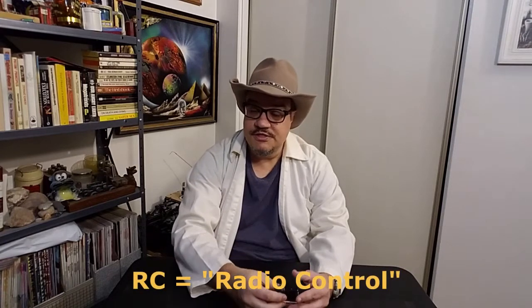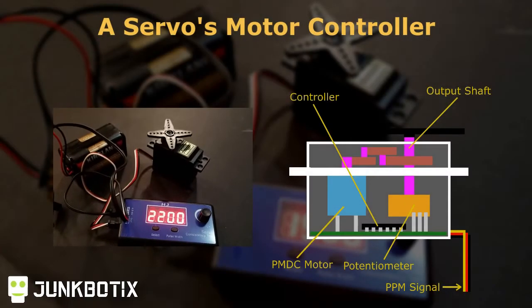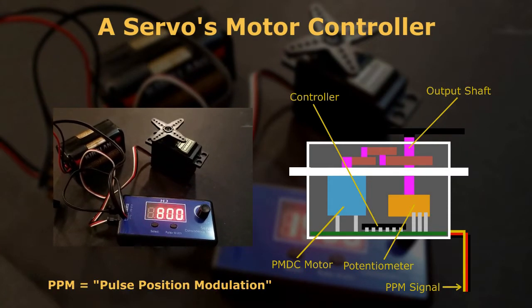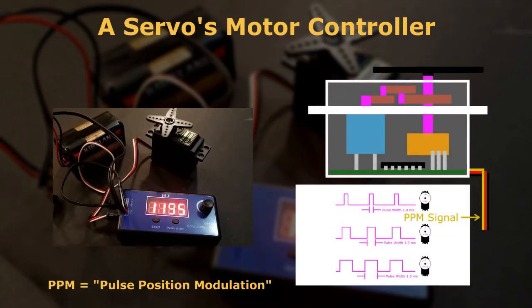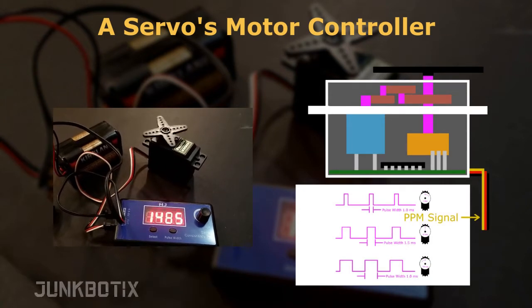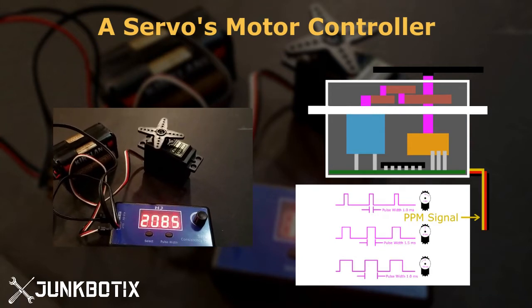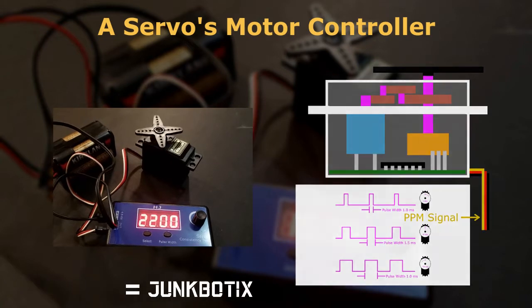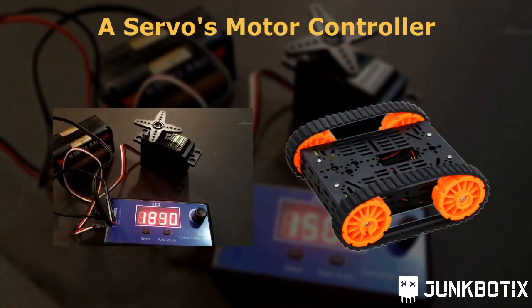A very basic motor controller is found inside an RC servo, which is essentially a mass-produced integrated PMDC gear motor and controller enclosed in a small package. The servo's internal motor controller takes an RC PPM signal and interprets it with feedback from a potentiometer to rotate the output shaft of the servo to the commanded position. When modified or manufactured as a continuous rotation servo, it interprets the PPM signal for direction and speed control and acts as a small gear motor. Due to their small size, servos are mainly only suitable for desktop rovers, carpet rovers, and similar smaller scale robots.